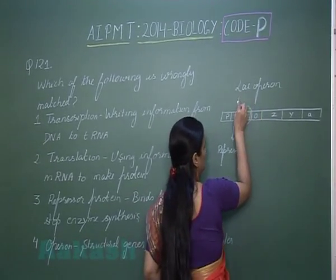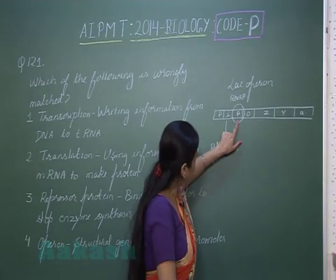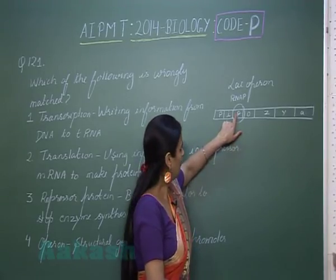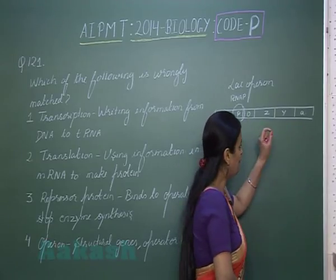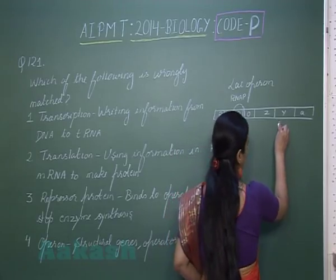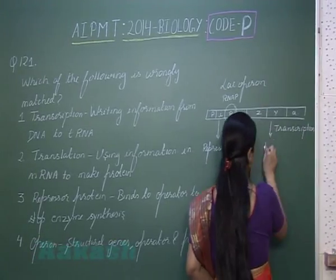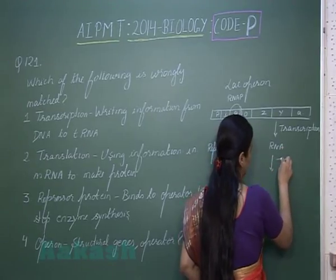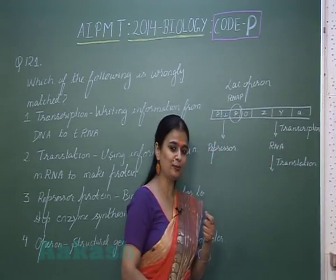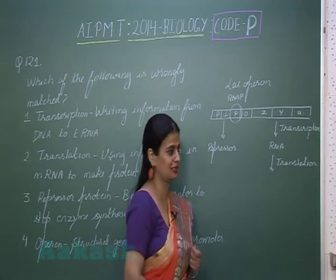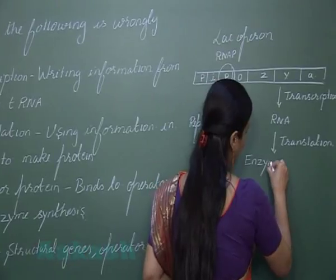The promoter is the site for attachment of RNA polymerase. RNA polymerase attaches to the promoter and then moves further onto the Z, Y, A genes to perform their transcription. After transcription there is formation of RNA, and this RNA undergoes translation. After translation there is formation of proteins — enzymatic proteins. So these three genes result in the formation of three enzymes.